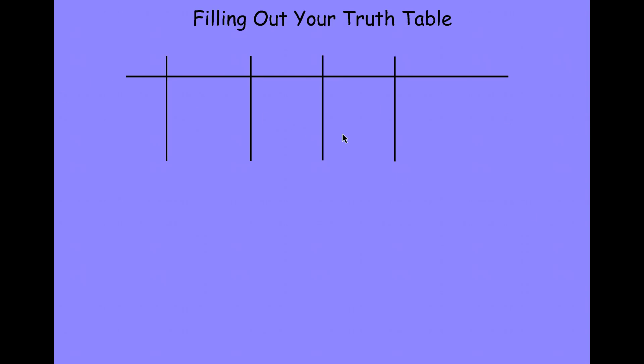When we start our Truth Table, we put our logical crosshairs in here. In the upper left-hand corner, we'll put in all of the capitalized letters that symbolize simple statements in all the formulas that we're going to evaluate in our Truth Table. This Truth Table has four formulas that use P and Q, so we'll put P and Q in the upper left-hand corner. In the upper right-hand segment, we'll put in each of the individual formulas that we're going to evaluate on this Truth Table.